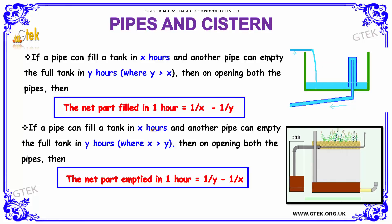Whereas if your scenario is like a pipe can fill a tank in x hours and another pipe can empty the tank in y hours where x is greater than y, then on opening both pipes we have the formula as 1/y minus 1/x. Since a pipe can empty the tank in y hours and that is less, hence the rate at which the tank is emptied will be higher. Hence 1/y minus 1/x.